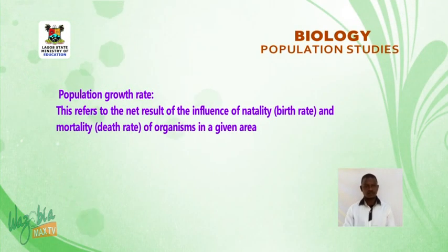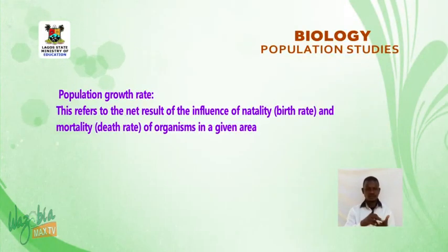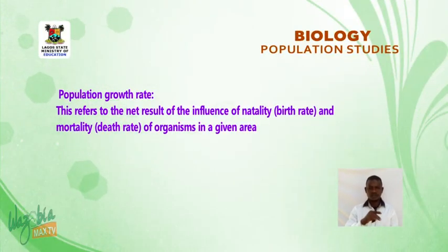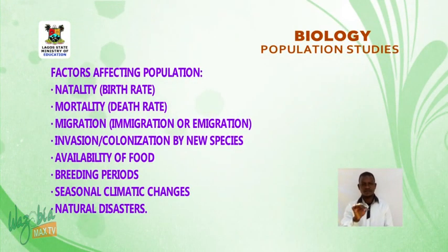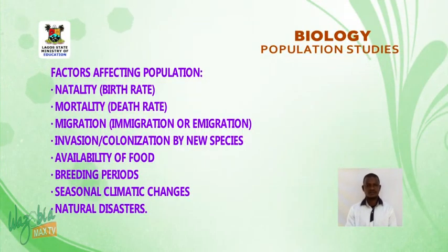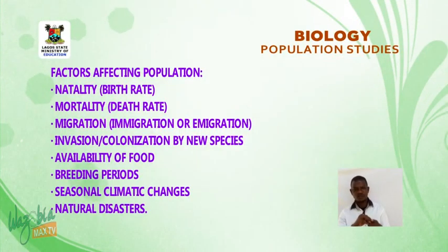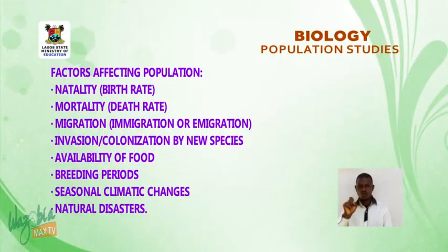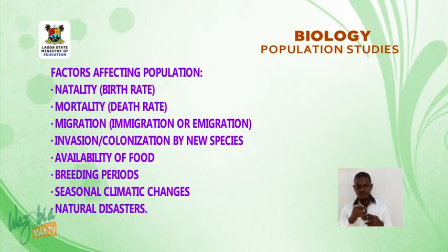Welcome back, students. Population Growth Rate refers to the net result of the influence of natality (birth rate) and mortality (death rate) of organisms in a given area. Factors affecting population include: natality, mortality, migration (immigration or emigration), invasion or colonization by new species, availability of food, breeding periods, seasonal climatic changes, and natural disasters.